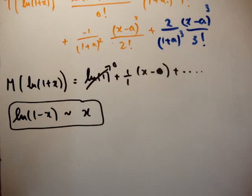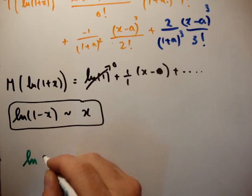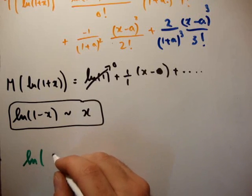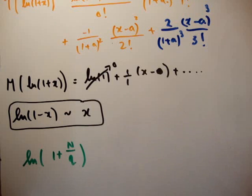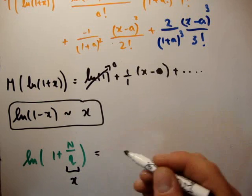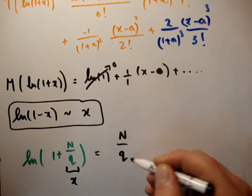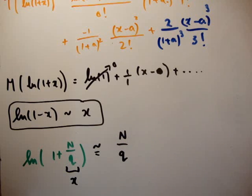So to use this for our thermodynamics, we'll see later on that we're going to be trying to get the natural logarithm of 1 plus n over q. Well, if we try and get a Maclaurin series on this, we call this approximately x, and therefore we're going to get the following if we take the Maclaurin series expansion of it.